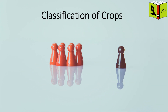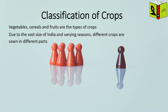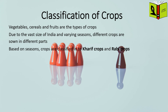Classification of crops. There are a lot of crops produced in India. Vegetables, cereals, and fruits are the types of crops. Due to the vast size of India and varying seasons, different crops are sown in different parts of the country. Based on seasons, crops are classified into Kharif crops and Rabi crops.